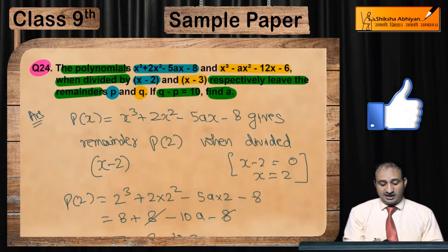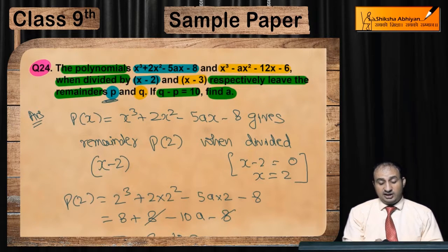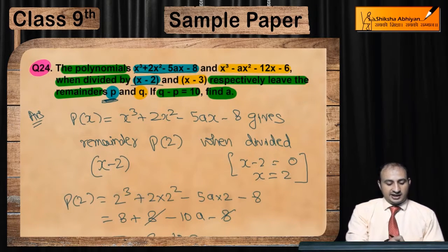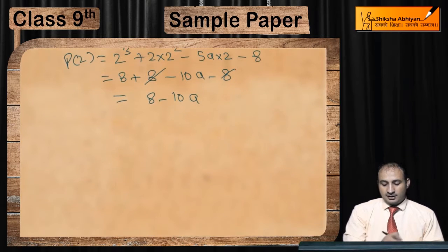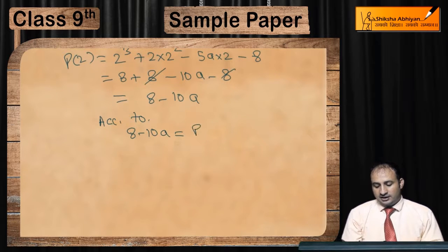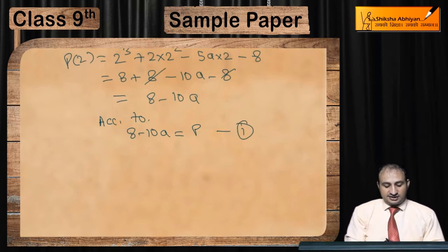And since dividing x³ + 2x² - 5ax - 8 by x - 2 gives remainder p, according to the question: 8 - 10a = p. Mark this as Equation 1.